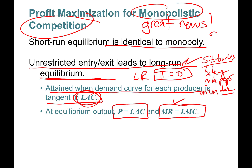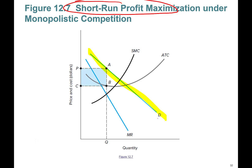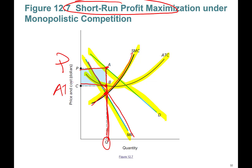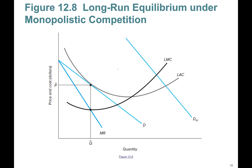Here is an example of short-run profit maximization. We have a demand curve for a monopolistically competitive restaurant, along with marginal revenue, short-run marginal cost, and average total cost. First, short-run marginal cost and marginal revenue intersect to give quantity. Going up to the demand curve gives the price at point A. Then hitting the average total cost curve gives ATC. Price minus ATC is a positive number, so profits are positive — shown by the blue shaded area.